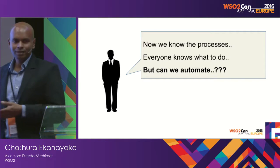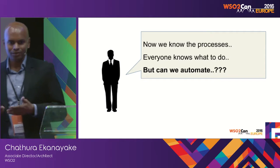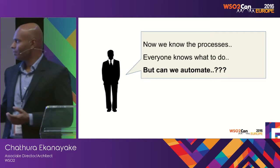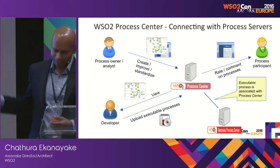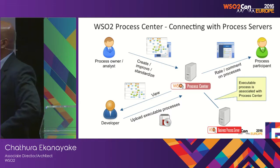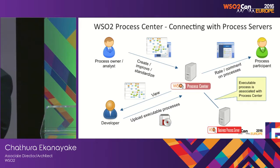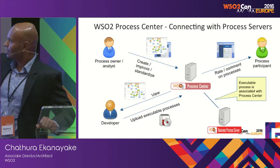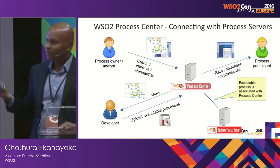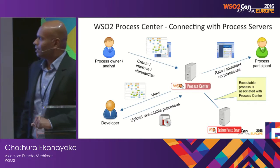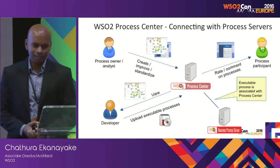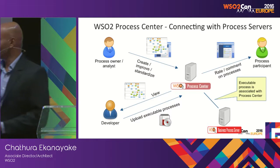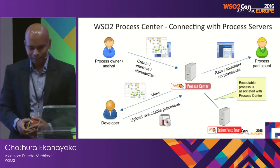Now Mike has documented all processes, so he knows what processes are available and what the steps are. All employees know what to do when something goes wrong or has to be done. This is also a collaborative tool — users can give ratings or comments to processes so that the processes can be iteratively improved. So now we have an improved process collection. The next step is to automate these processes.